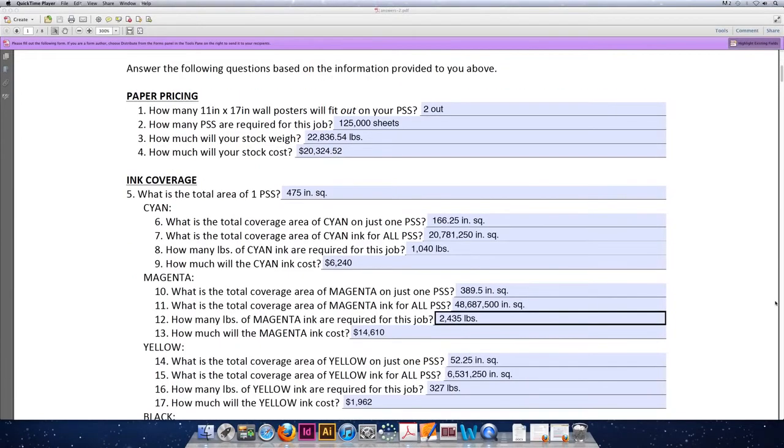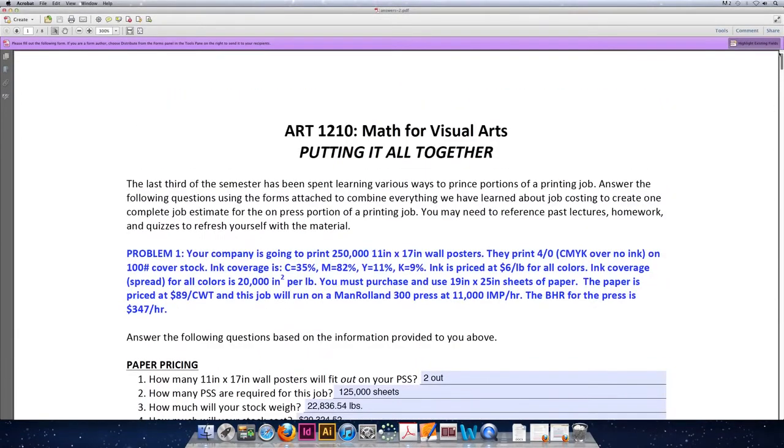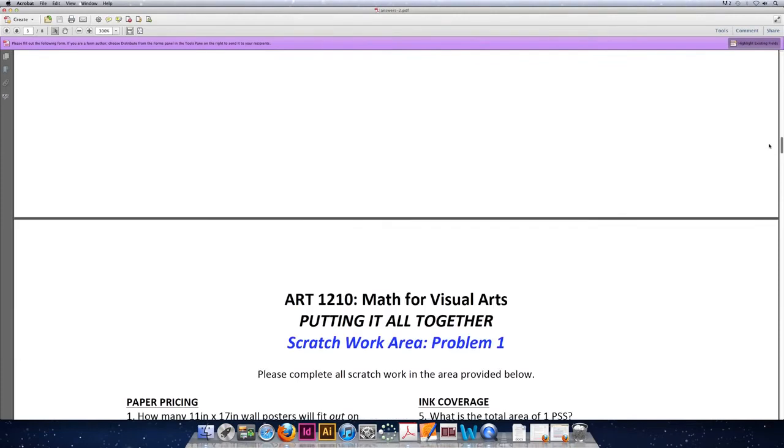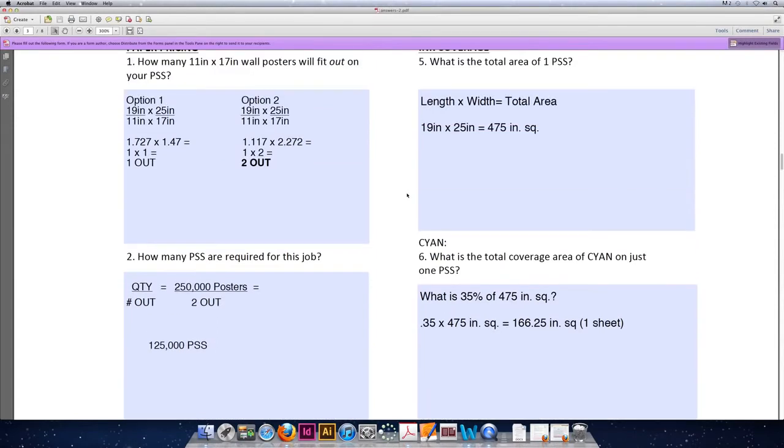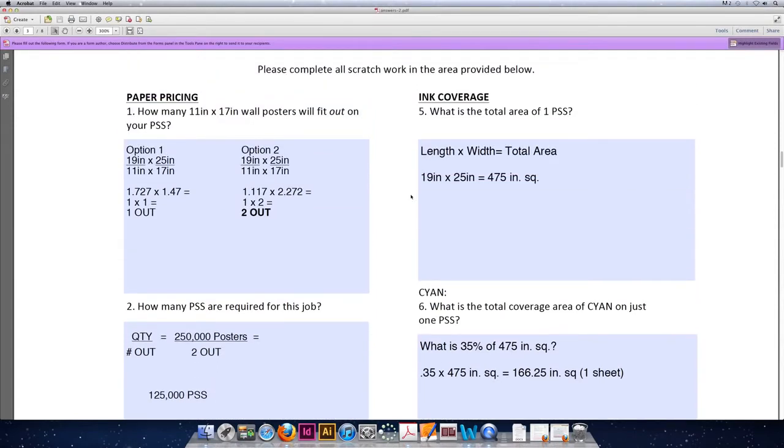So we're going to start with problem number one. That's the blue problem, questions one through four. Question number one asks, how many out will fit on your press size sheet? For question one, you have to be able to recognize what is your press size sheet and what is your item size. And then beyond that, you need to be able to know which formula to use.